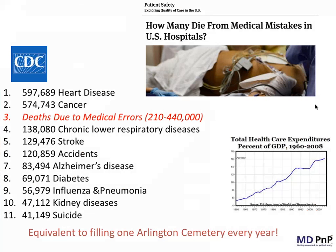These are figures becoming increasingly well-known. If you look at the CDC website, the top ten causes of death in the U.S. list heart disease and cancer as one and two. If you insert what we know about deaths due to preventable medical errors in hospitals — somewhere between 200,000 and 400,000 deaths — that would appear as number three on that list, the third leading cause of death in the U.S., enough to fill one Arlington cemetery every year, despite spending 17% of our GDP on healthcare.